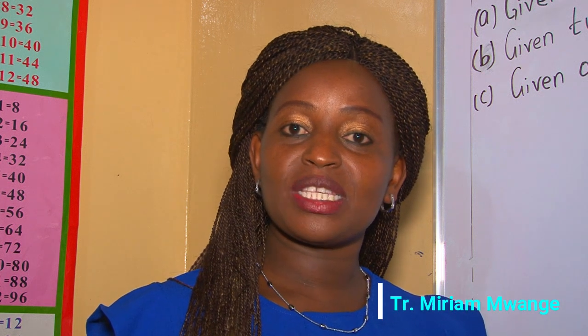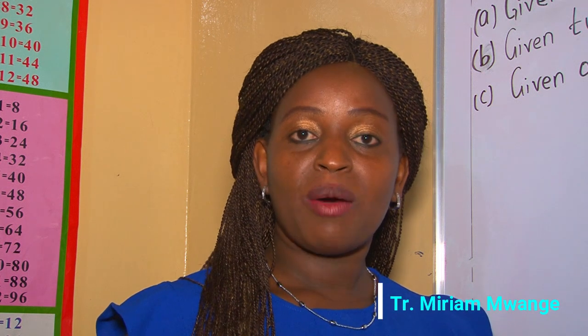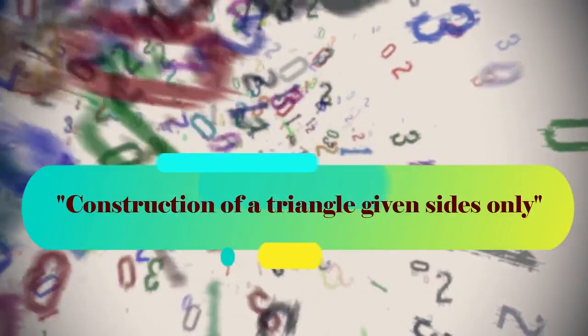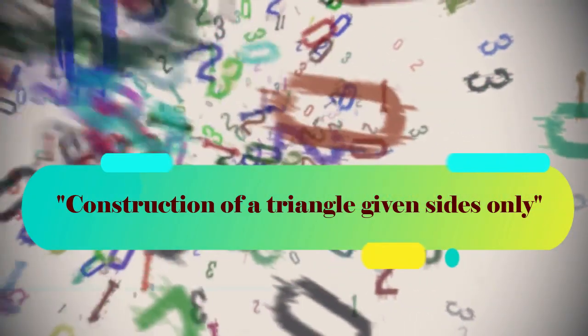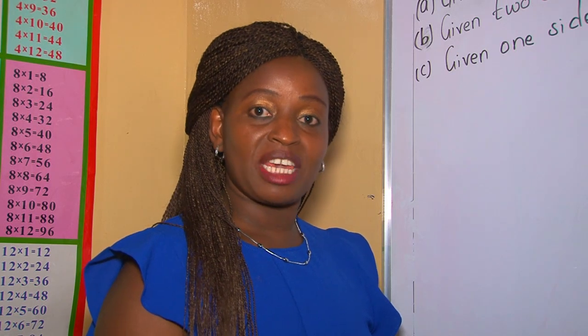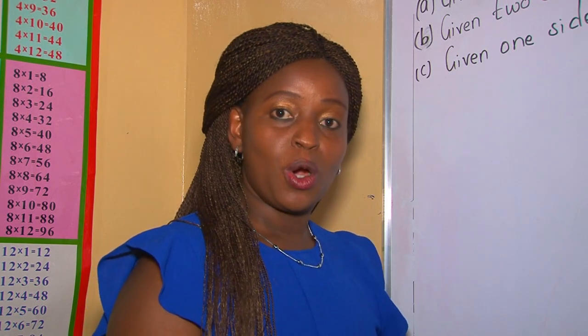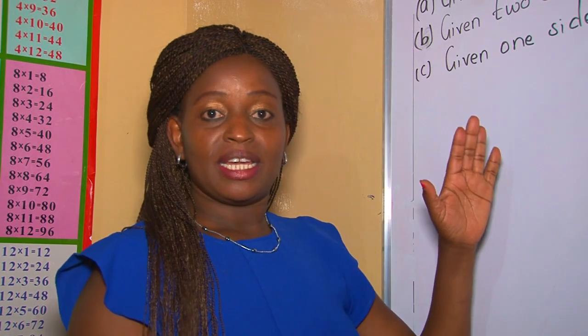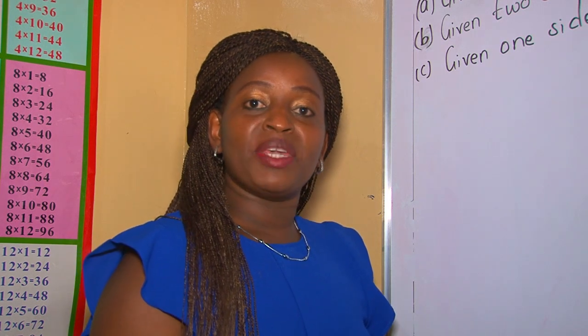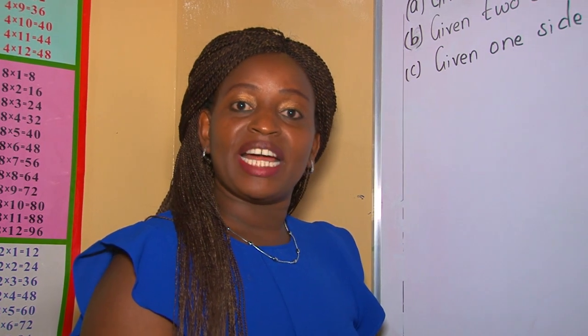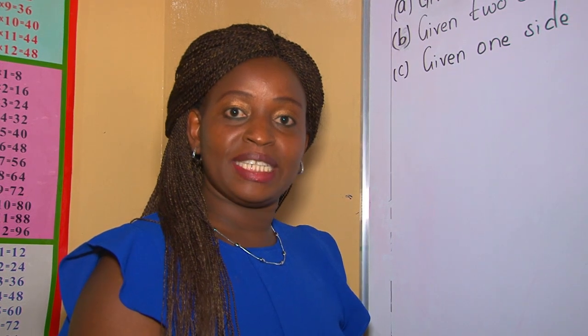Welcome once again, my dear viewers. Today's lesson is about construction. For you to come up with an accurate triangle, you need to follow the following steps. To begin with, you can be given a triangle with only sides — it might be an equilateral triangle, might be a scalene, or might be an isosceles triangle — provided you are only given all the sides with no angle.